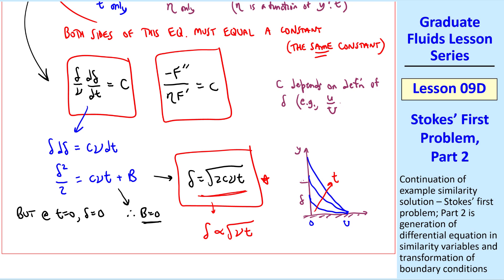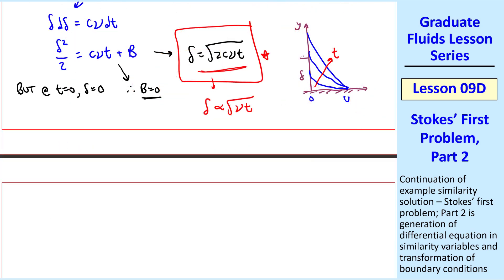So c depends on the definition of delta. For example, we can define delta as the height where u/U is 0.01, or 1%, or 5%, etc. Once we have the solution, we could go back and figure out what c will correspond to one of these definitions. For now, let's just leave c in as an arbitrary constant.